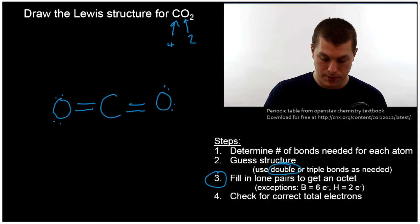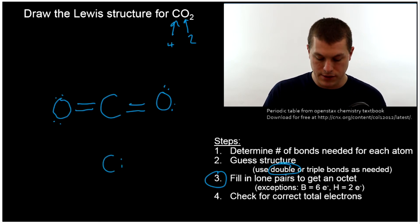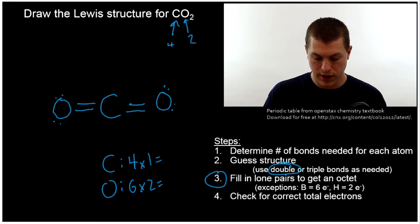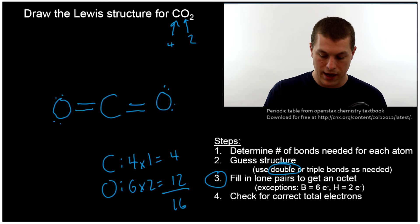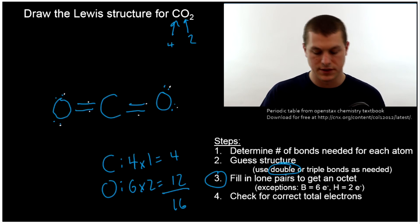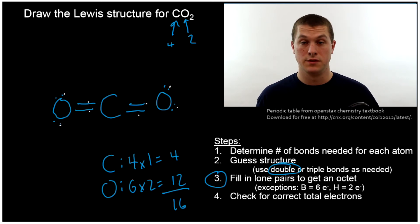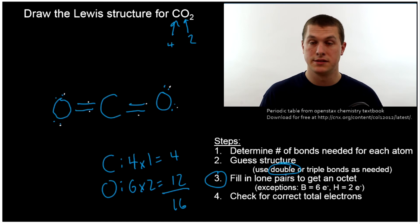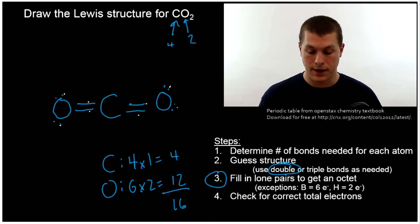Let's check that we have the right number of valence electrons. Carbon has four, there's one of those. Oxygen has six valence electrons, there are two of those — so we get four plus twelve, which totals sixteen valence electrons. Counting in our structure: one through sixteen. We have the right number of valence electrons and the right number of bonds — this is the correct Lewis structure for carbon dioxide.